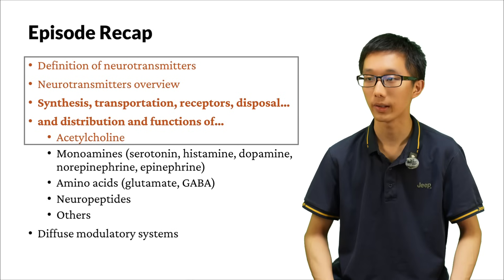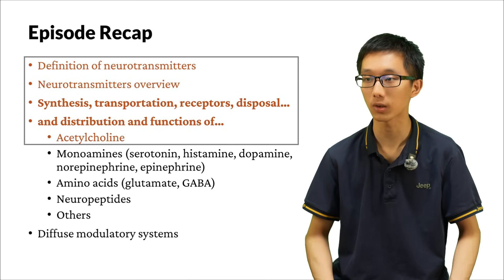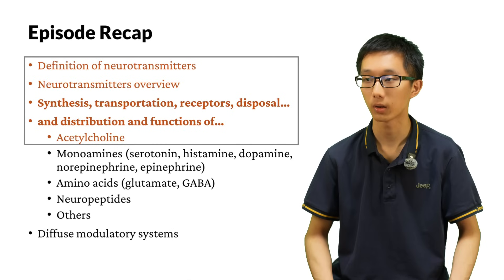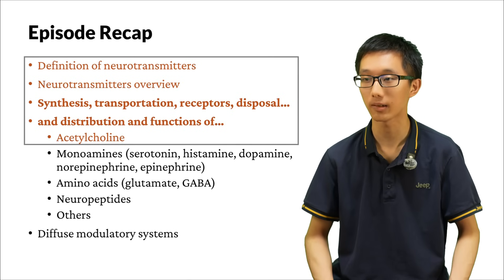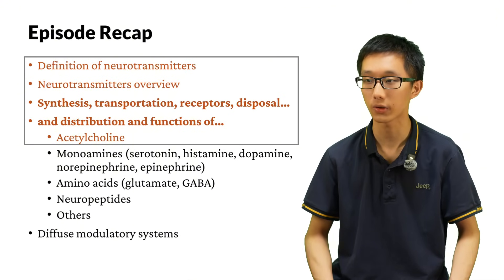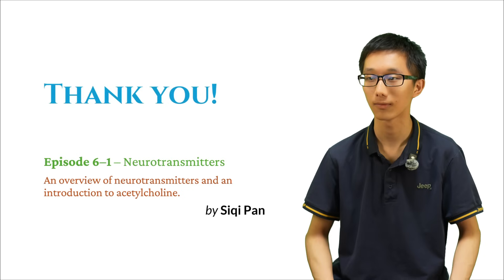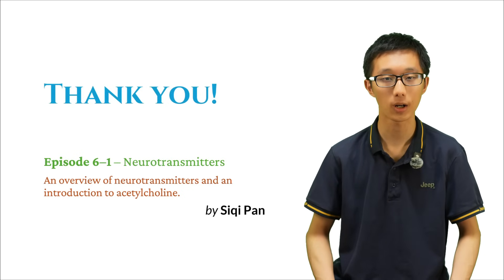That is all for this episode. We learned about neurotransmitters in general, and took a detailed look at acetylcholine, our old friend. In the next episode, we are going to meet new friends — namely monoamines, amino acids, neuropeptides, and other special neurotransmitters — and take a look at what diffuse modulatory systems are. Thank you for watching part 1 of episode 6, and looking forward to seeing you again in the next part.